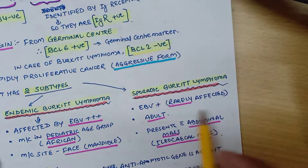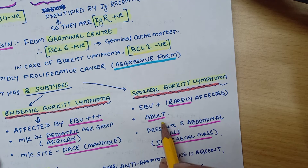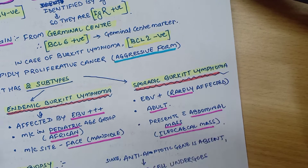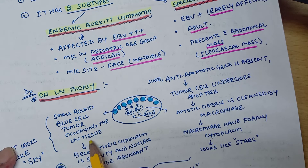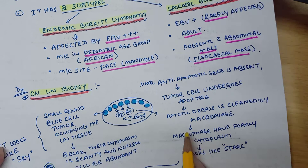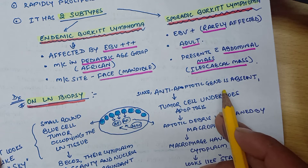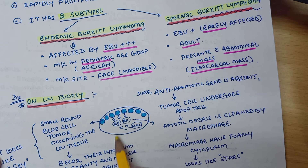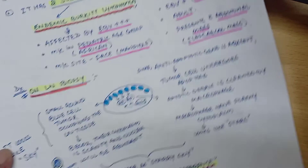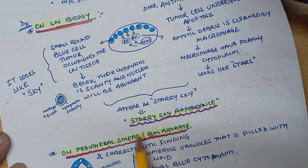Sporadic Burkitt's lymphoma rarely involves Epstein-Barr virus, is more common in adults, and presents with an ileocecal abdominal mass. On lymph node biopsy, small round blue cell tumors give a sky-like appearance. Anti-apoptotic gene absence causes apoptosis; macrophages clear the debris giving a starry sky appearance. On peripheral smear or bone marrow aspirate, numerous lipid-filled vacuoles and royal blue cytoplasm are seen.